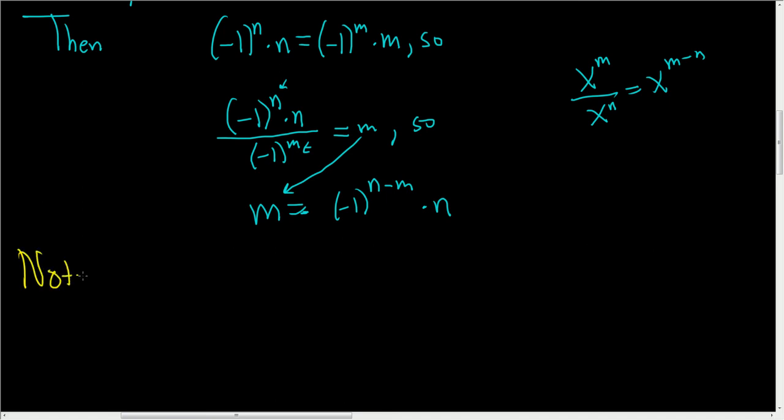Note that m > 0 and n > 0, so both are positive. The only way the entire right-hand side could be positive is if (-1)^(n-m) is positive. And the right-hand side has to be positive because m is positive.